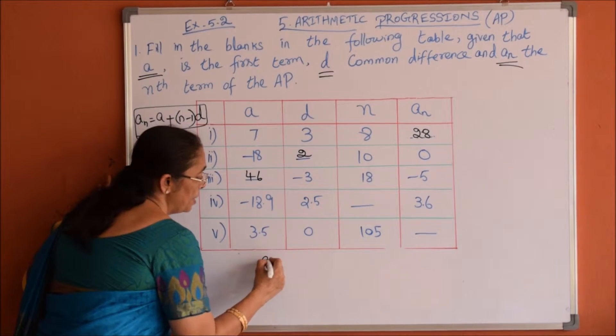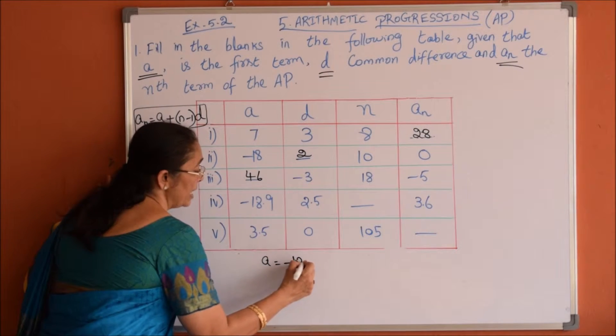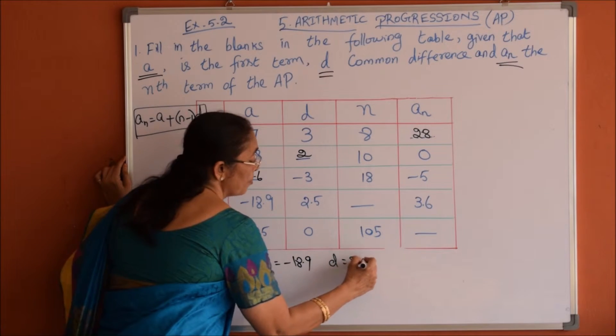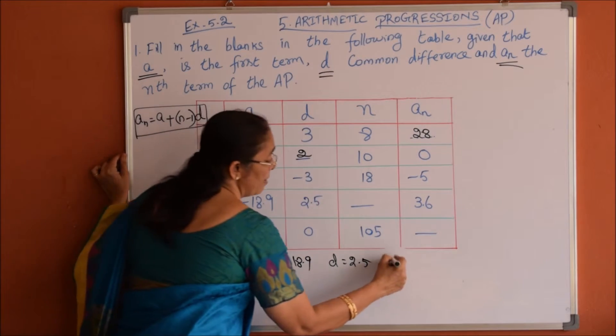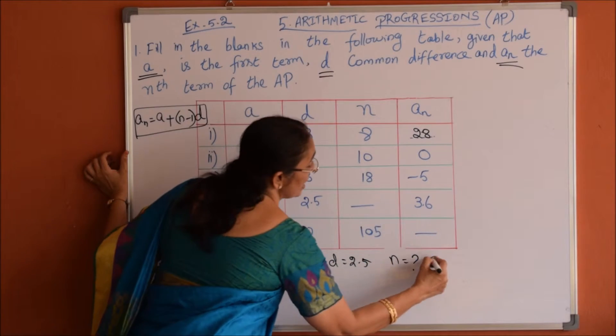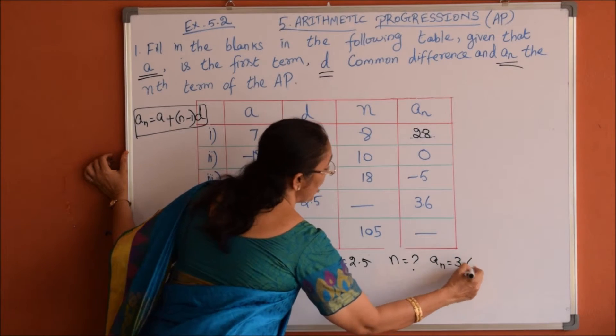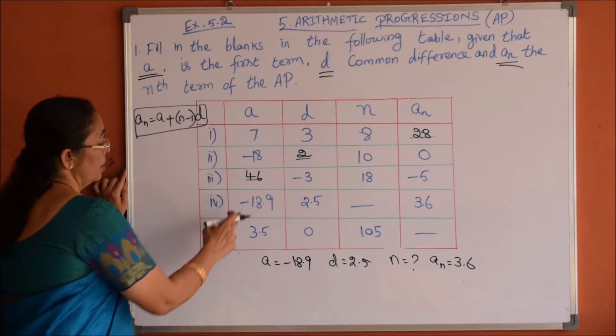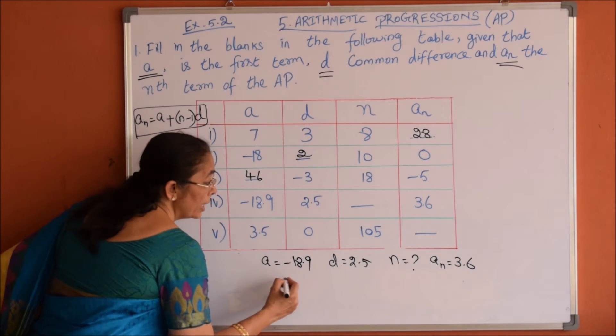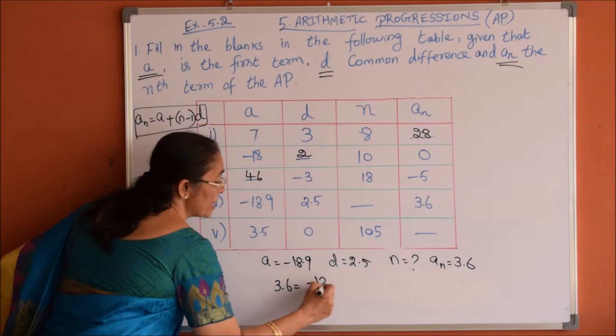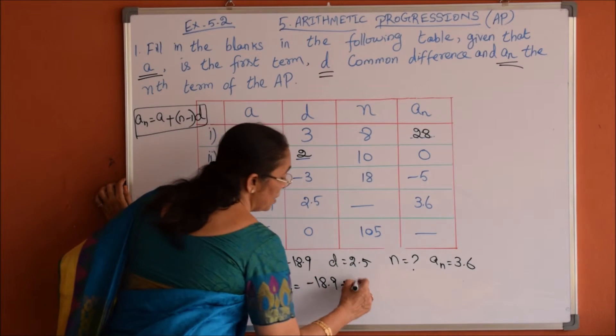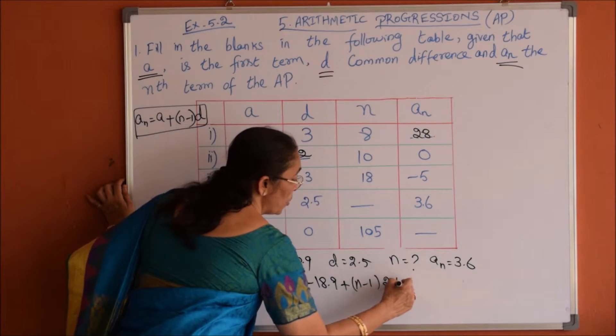For the fourth one, a is given as minus 18.9 and common difference is given as 2.5. We have to find the n value, given that An equals 3.6. Using the formula, 3.6 equals minus 18.9 plus (n minus 1) times 2.5.